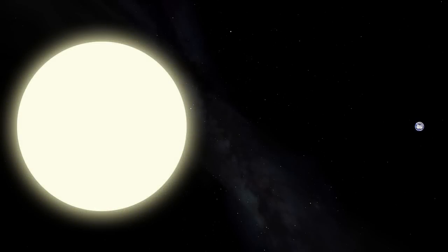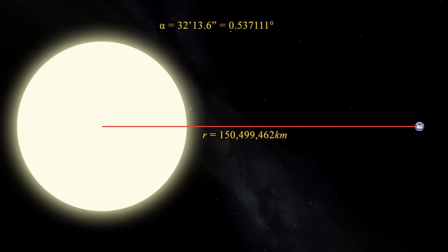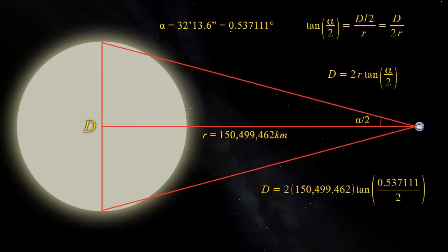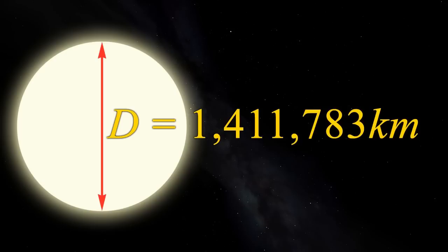Earlier that day, Alice and Bob measured the angular diameter of the sun using safe observing techniques. They find it to have an angular diameter of 32 arc minutes and 13.6 arc seconds, or 0.537 degrees. Using more simple geometry, we can calculate the size of the sun using our old friend the bog standard tangent formula. The sun has an angular diameter alpha at a distance r, which we now know. We can see that the tangent of alpha over 2 will be equal to half the diameter of the sun divided by r. Rearranging this, we find that the diameter d is 2r tan alpha over 2. Plug in the numbers and we get a diameter for the sun of 1,411,783 kilometers. The accepted value is 1,392,684 kilometers.